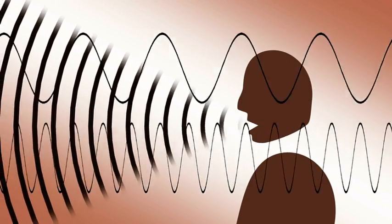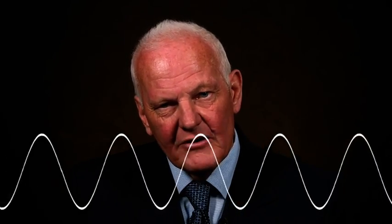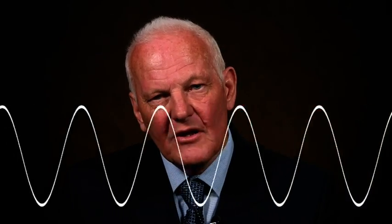First of all, frequencies. If I speak with a very high voice, I've got a high frequency sound. And if I speak with a very low voice, I've got a low frequency sound. All of us can also have different amplitudes to our voice. If I were to speak loud — more loud — there is more amplitude. And if I was to speak very quietly, there's less amplitude.